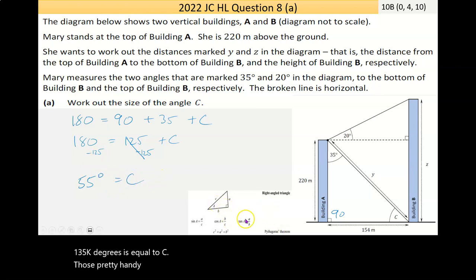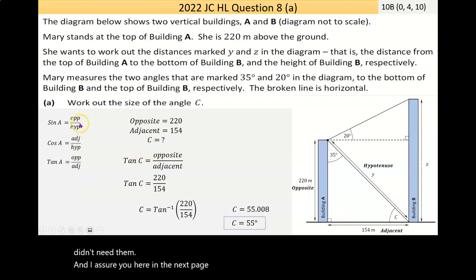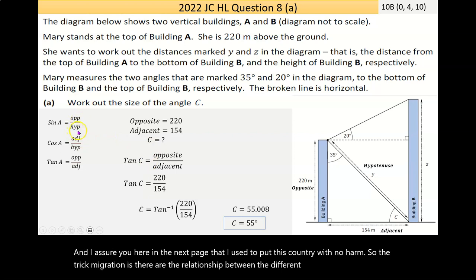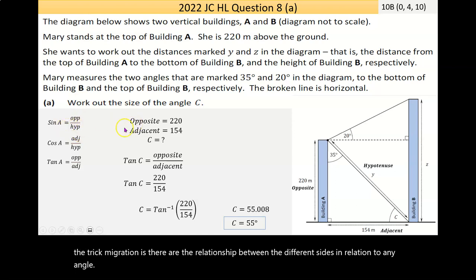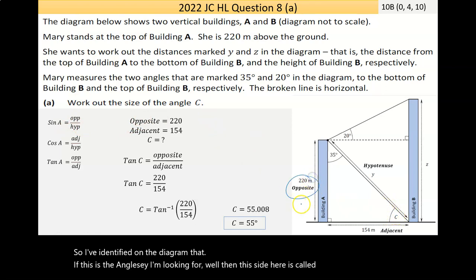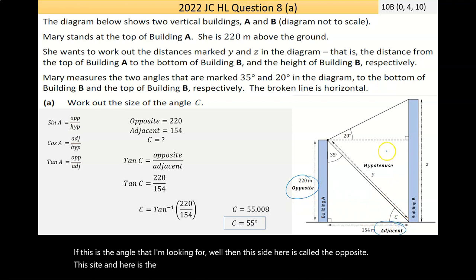That was pretty handy. I actually put in the formulas for the trigonometric ratios and Pythagoras, and didn't need them. And I'll show you here on the next page that I used the trigonometric ratios. The trigonometric ratios are the relationship between the different sides in relation to any angle. So, I've identified on the diagram that if this is the angle C I'm looking for, well, then this side here is called the opposite. This side down here is the adjacent, and the side across the right angle, the 90 degree is the hypotenuse.